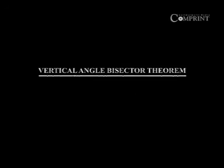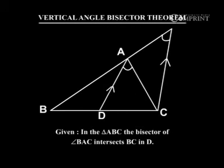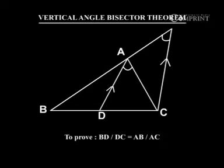Vertical Angle Bisector Theorem Solution. Given in triangle ABC, the bisector of angle BAC intersects BC in D. To prove: BD by DC equal to AB by AC.